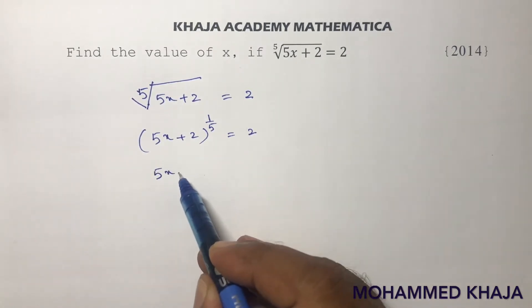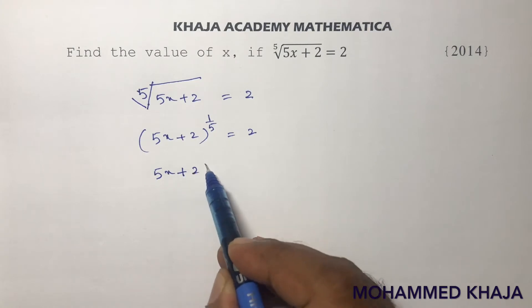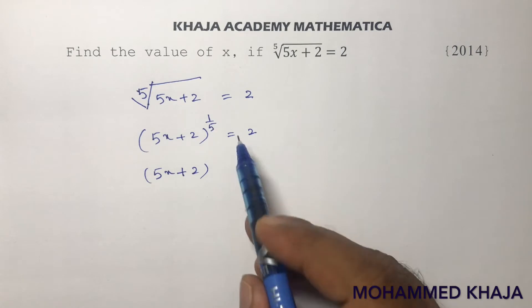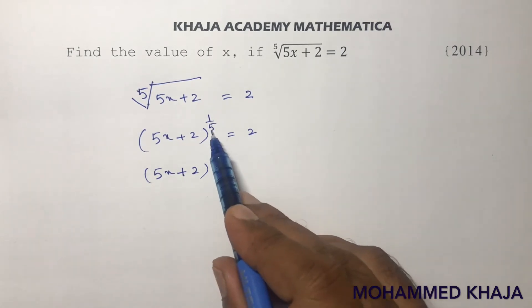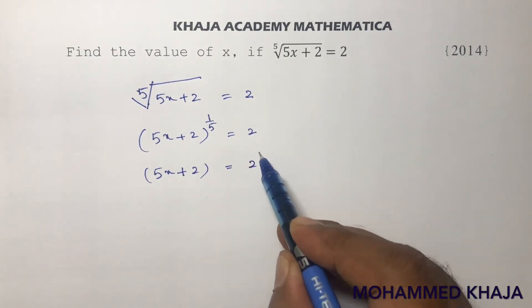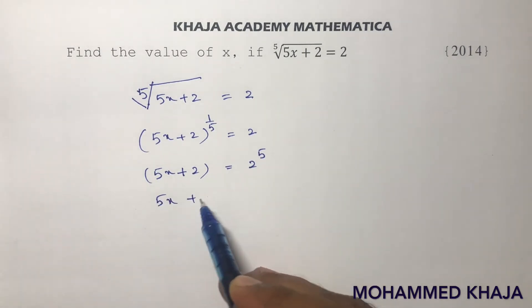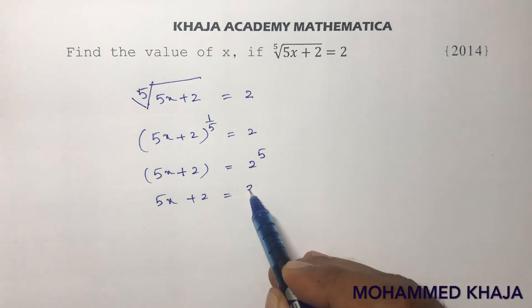Now, 5x plus 2. See, you can say applying whole power 5 on both the sides, or 1 by 5 power here, 1 by 5 will transpose, it will become 2 power 5. So, 5x plus 2 equals 32.